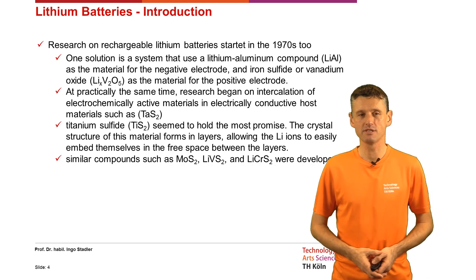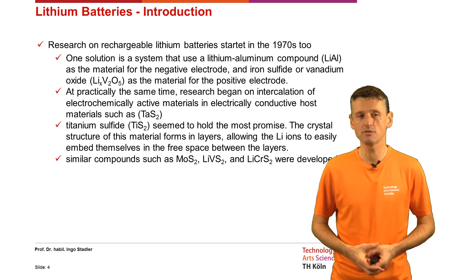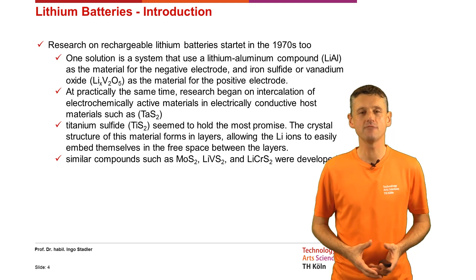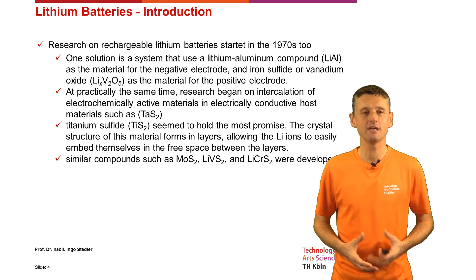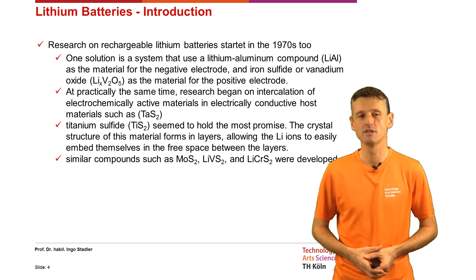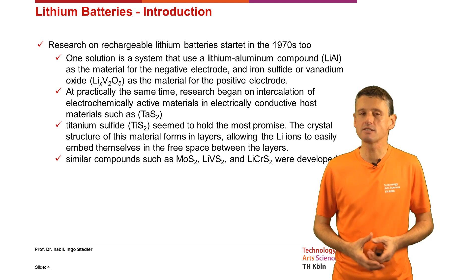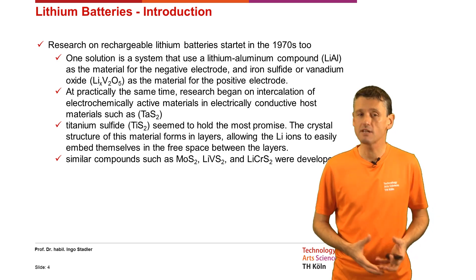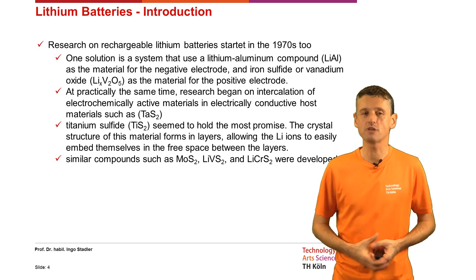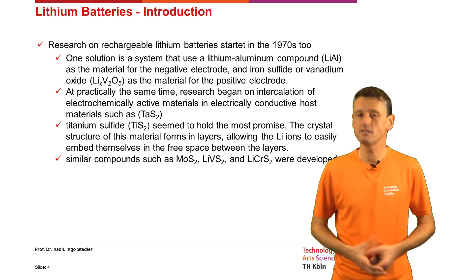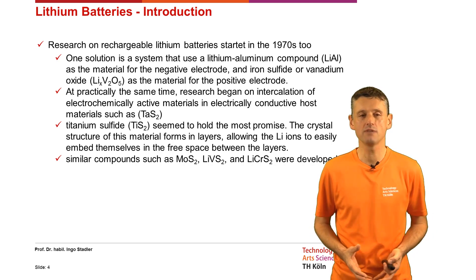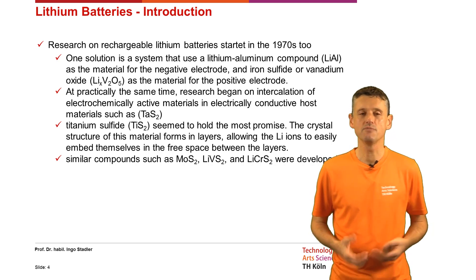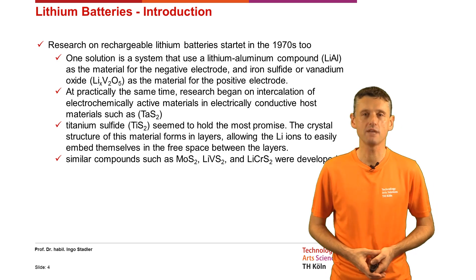Research on rechargeable Lithium batteries also started in the early 1970s. One solution used a Lithium aluminium compound as the negative electrode material and iron sulfate or vanadium oxide as the positive electrode material. At practically the same time, research began on the intercalation of electrochemically active materials in electrically conductive host materials such as tantalum sulfate and titanium sulfate, which seemed to hold the most promise. The crystal structure of these materials forms in layers, allowing Lithium ions to easily embed themselves in the free spaces between the layers. Similar compounds using molybdenum, lithium vanadium, or lithium with chrome were also developed.